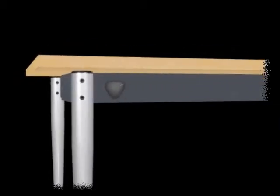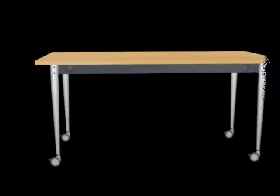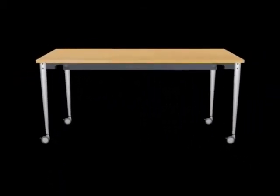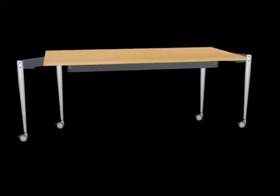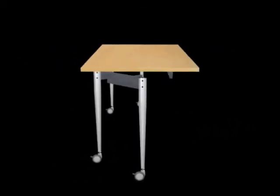After doing so, both legs can be pushed outwards away from the table's center. Finally, the table top can be rotated 90 degrees and lowered to the ground.